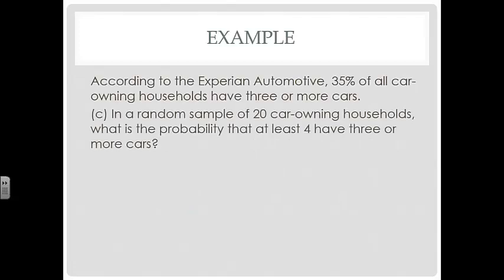Now let's find the probability that at least four households have three or more cars. At least four means X ≥ 4, which equals one minus P(X ≤ 3) — the complement of what we already found. The left side covers all values from four up to twenty, and the right side covers zero, one, two, and three. Subtracting the previous result from one gives us 0.9556 — the probability that at least four have three or more cars.